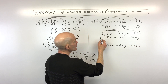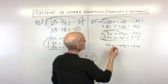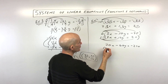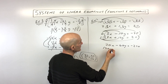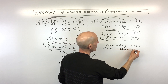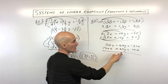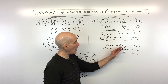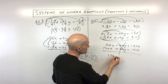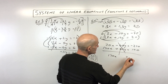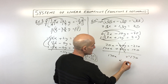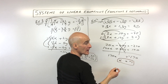Then distributing the 5 to each term in the bottom equation: 5 times 28 is 140x, plus 60y equals 100. Notice what happens when we add — the y's cancel because one's negative and one's positive. This gives us 170x equals negative 170. Divide by 170, and x comes out to negative 1. That worked out pretty nicely.